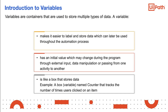A collection variable contains multiple data entries of the same type. It's useful to think of a variable like a box that stores data. For example, a box or variable named counter that tracks the number of times users clicked on an item.